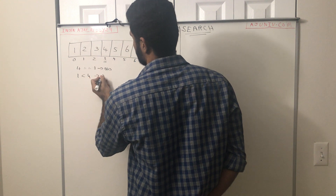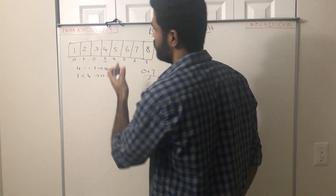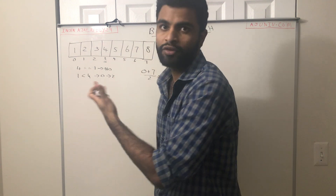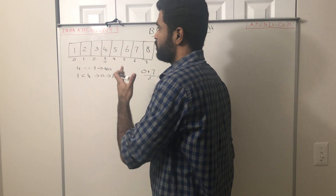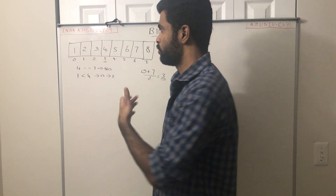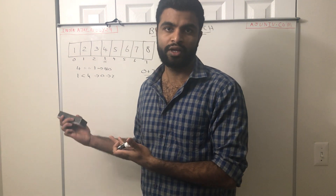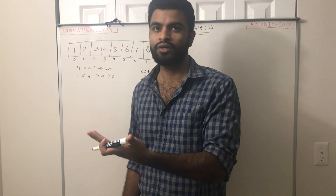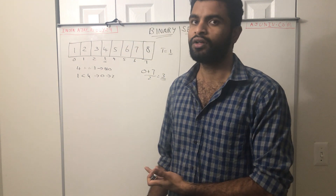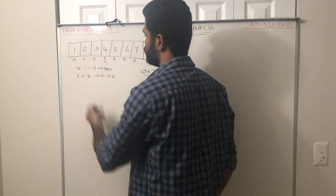If you are searching for an element and it is greater than the middle element, consider the right sub-array, because the right side holds all elements greater than the middle. If the element is less than the middle element, consider the left sub-array, which holds all smaller elements. Since 1 is less than 4, we consider the left sub-array from index 0 to 2.